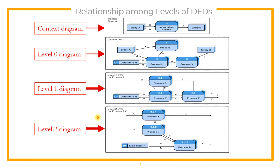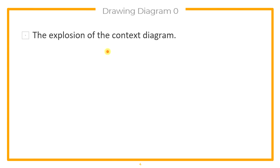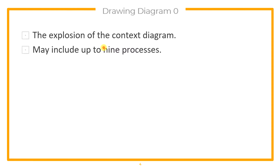Level 1 and Level 2 are what we call Child Diagrams. Drawing Diagram 0 is just the explosion of the Context Diagram — we are only getting the detail of the Context Diagram. It is limited to 9 processes so that our diagram stays simple, with no too many processes involved. Each process is numbered so that we can determine which one is exploded.